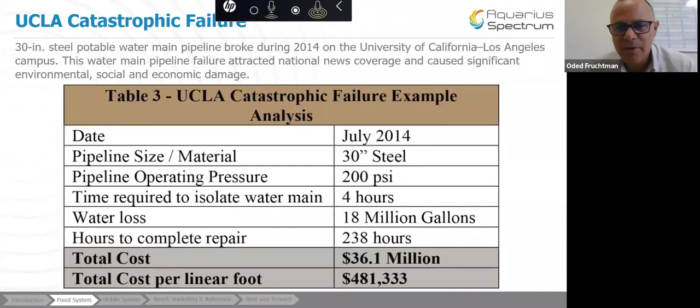This is an example some of you might be familiar with, a 30-inch pipe breaking in the University of California in Los Angeles back in 2014. It was a 30-inch steel pipe that it took four hours to isolate. In that time, 18 million gallons of water were lost. It took a lot of hours to repair, and eventually the bill ramped up to total cost of 36 million. Remember I talked about half a million per foot, that's the half a million per foot, if pipe condition is neglected.